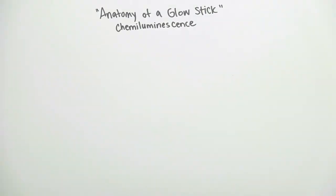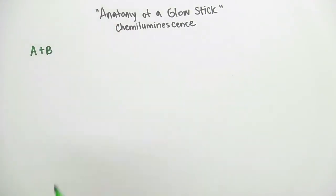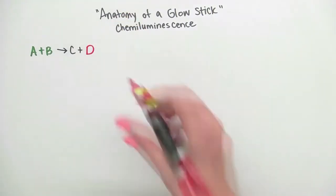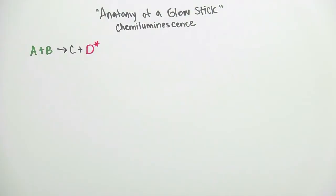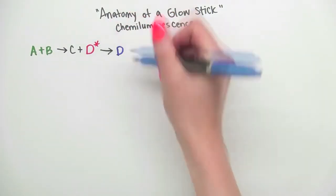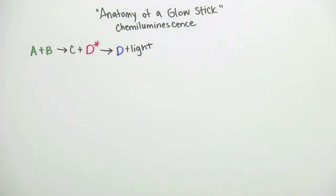So how does a reaction produce light? Let's start with two molecules. Let's call them A and B. They react to produce C and D. Energy that's produced in the reaction causes the electrons in D to become excited. As the electrons relax back down, they give off energy as light. So basically chemical energy is transformed into light energy. This all happens in one step as the reaction is progressing.